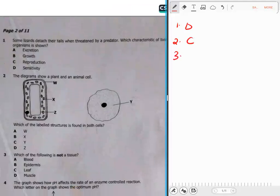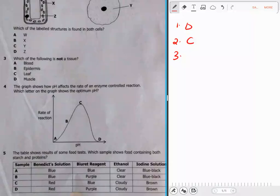Which of the following is not a tissue? A leaf is not a tissue, it's an organ. So C is the answer.